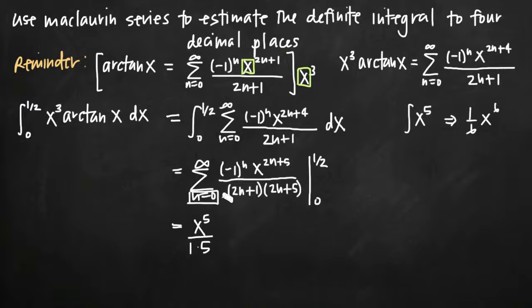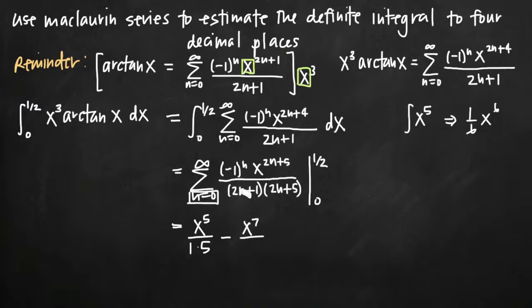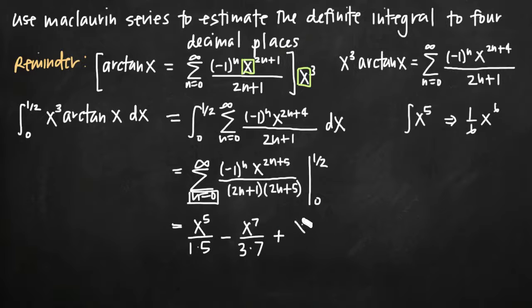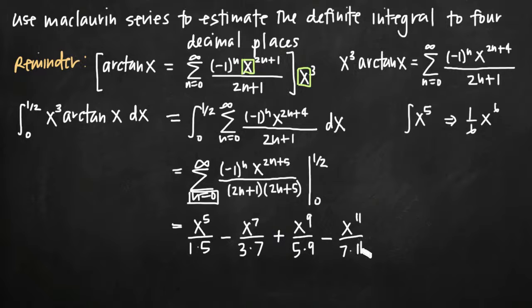When we plug in n equals 1, we get negative 1 to the first power, which gives us a negative, so this term is negative. Plugging in n equals 1: 2 times 1 plus 5 is 7, so we get x to the 7th divided by 3 times 7. Continuing with n equals 2, 3, 4, etc., we can see this is an alternating series. We get x to the 9th divided by 5 times 9, minus x to the 11th divided by 7 times 11, and so on.